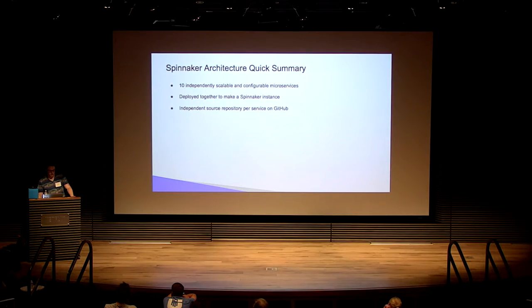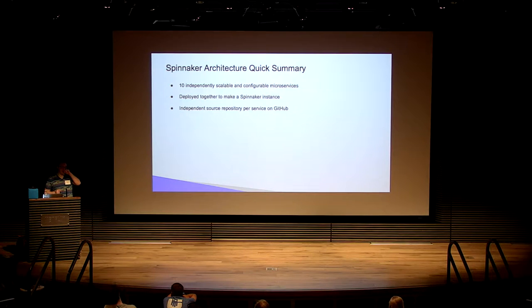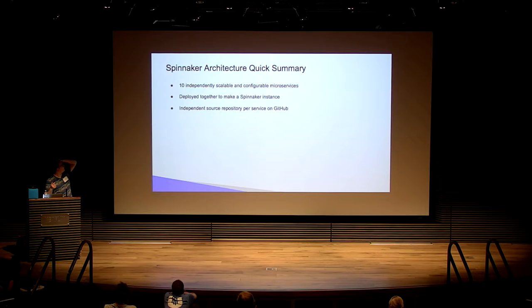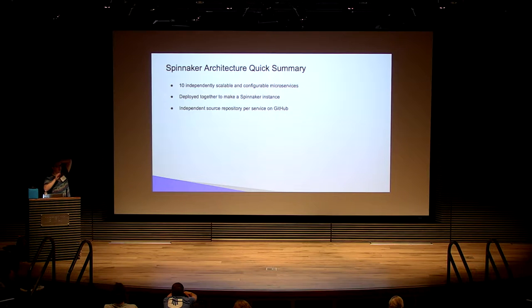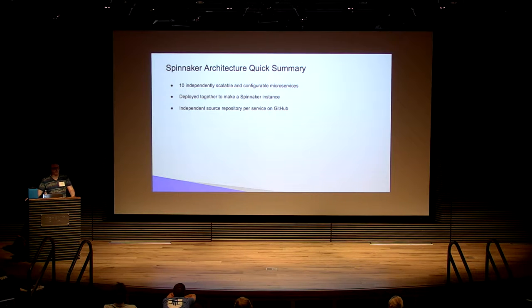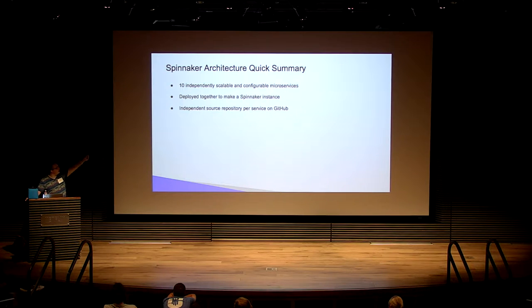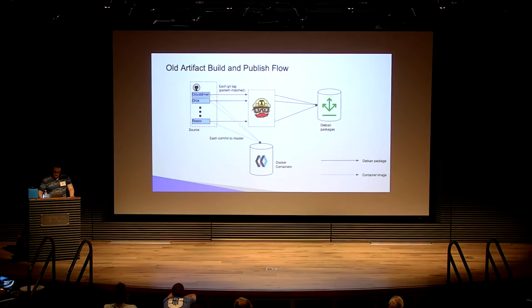Before we get into the details about how we do any of the releasing, we need to understand what we're dealing with. Spinnaker is 10 independently scalable microservices — configurable, deployable, and obviously deployed together to make one Spinnaker instance. Every microservice has an independent source repository on GitHub, so there are 10 microservices and 10 repositories.